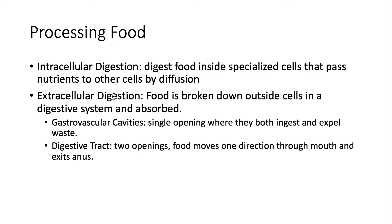Extracellular is outside the body — food is broken down outside cells in a digestive system and then absorbed. We have a digestive tract with two openings; it's a one-way system where food moves in one direction through the mouth and exits the anus. The food technically does not enter our body until we absorb it, and we know that because we have waste — feces. Humans have an extracellular digestive tract where we break down food in a complex series of processes, then absorb it and deliver it to cells where they do cellular respiration and make energy, creating ATP.